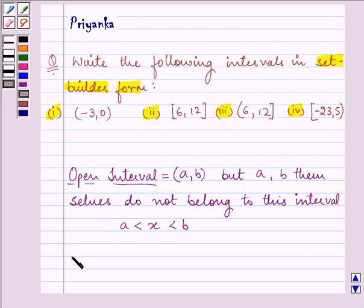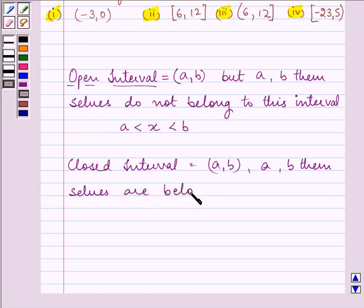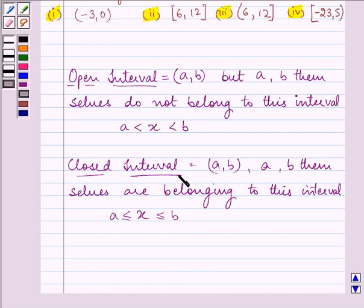Whereas in an enclosed interval, if we write A, B are the elements, then A and B themselves are belonging to this interval. That means X is greater than equal to A and less than equal to B. The knowledge of these intervals will help us in the solution, and here we represent them by these brackets. So these are the key ideas that are going to help us in the following question.